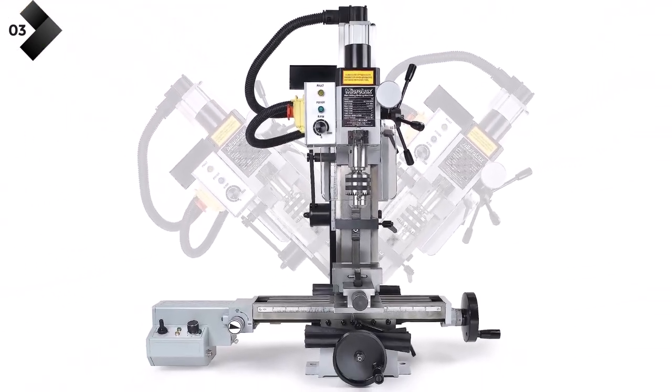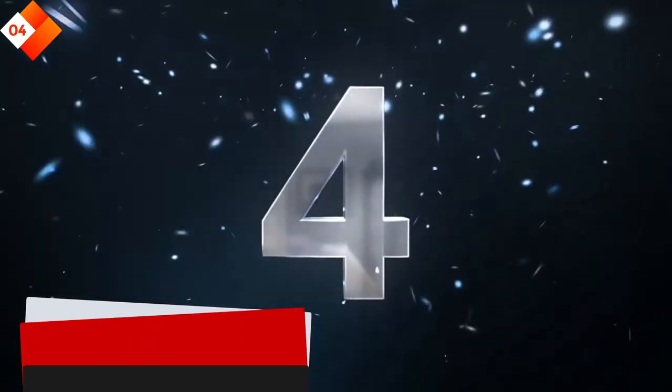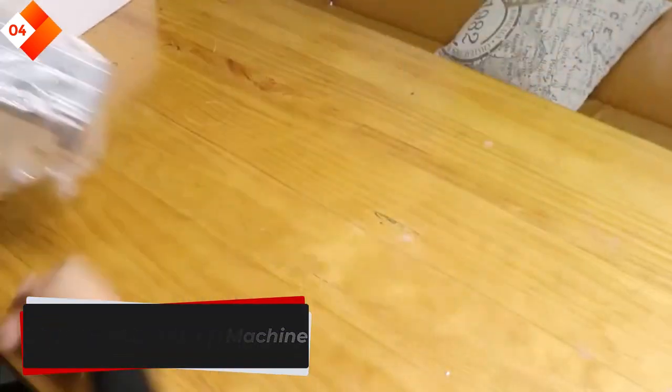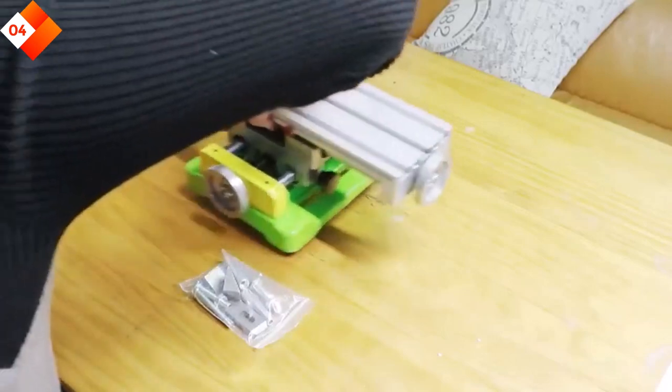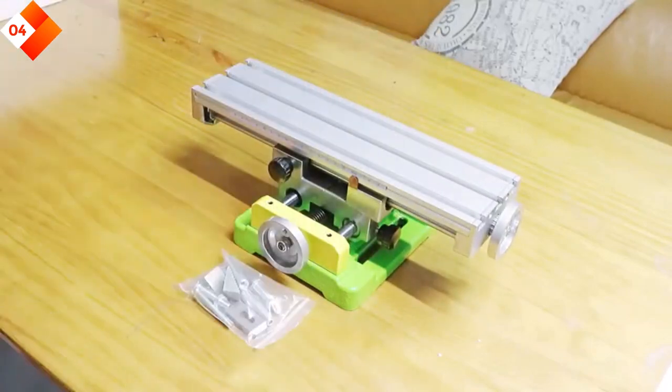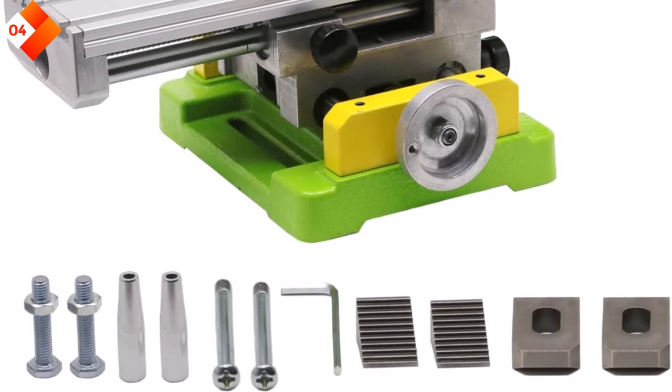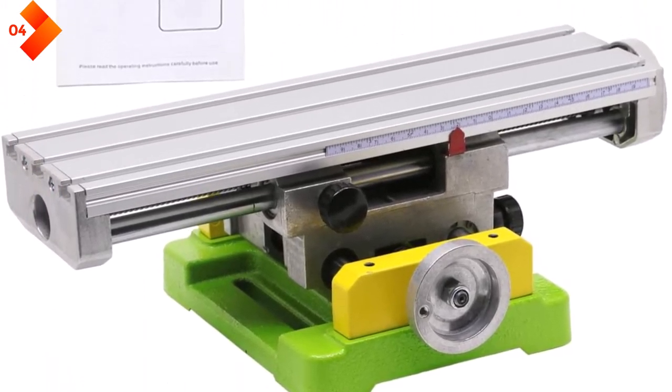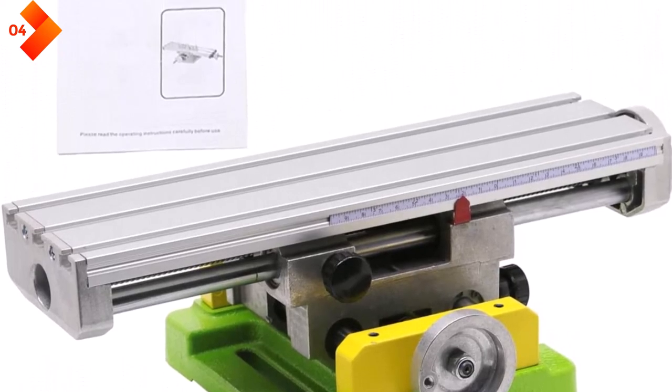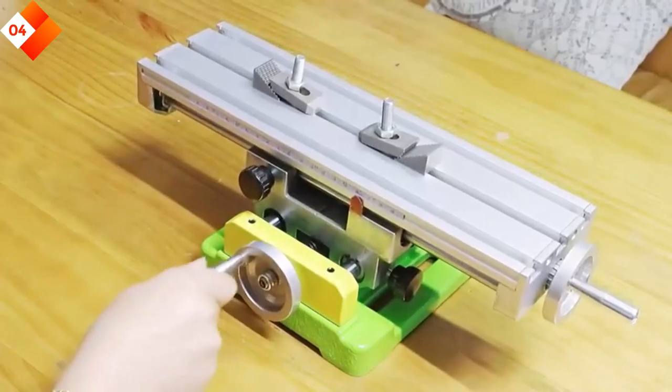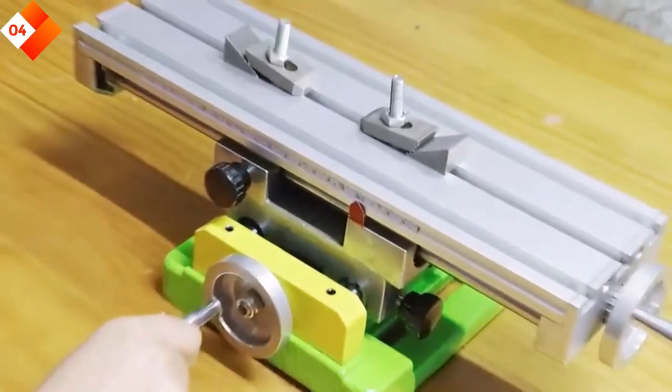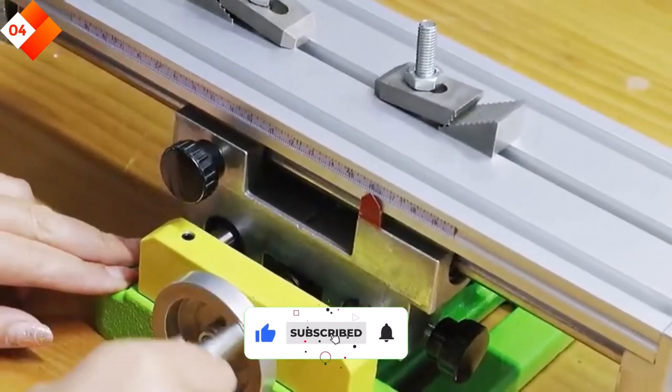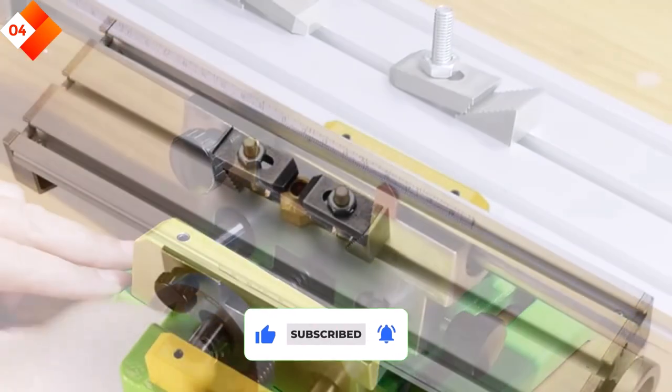Number four: Grand mini milling machine. This work table offers a stable and adjustable platform, allowing you to precisely position your workpiece for accurate machining. With its multi-functional design, this work table can be used for various applications including drilling, milling, and engraving. It is compatible with most drill presses and milling machines, making it a versatile addition to your workshop.